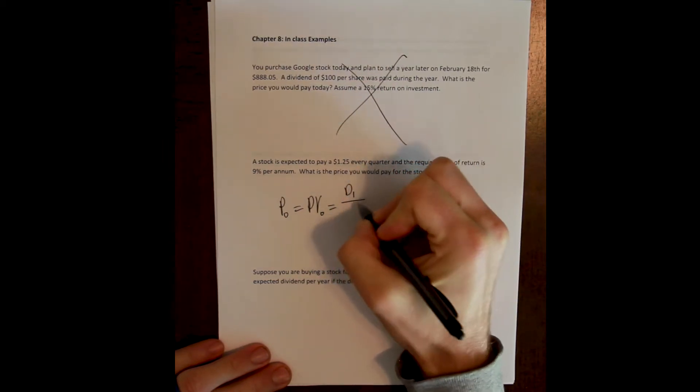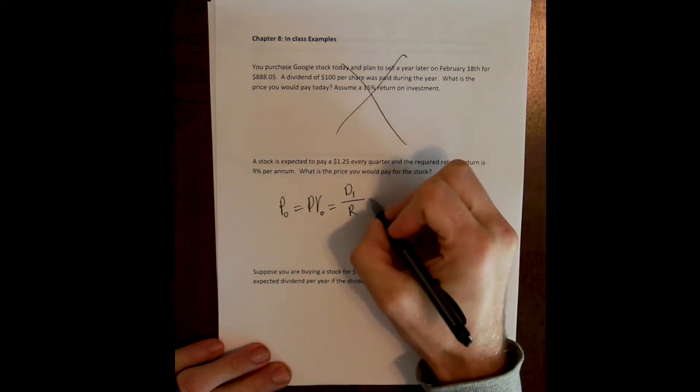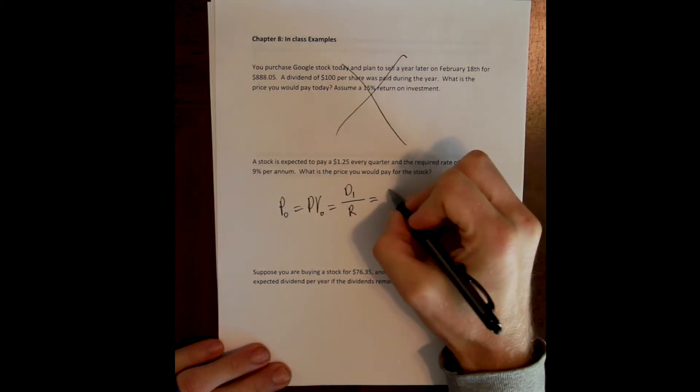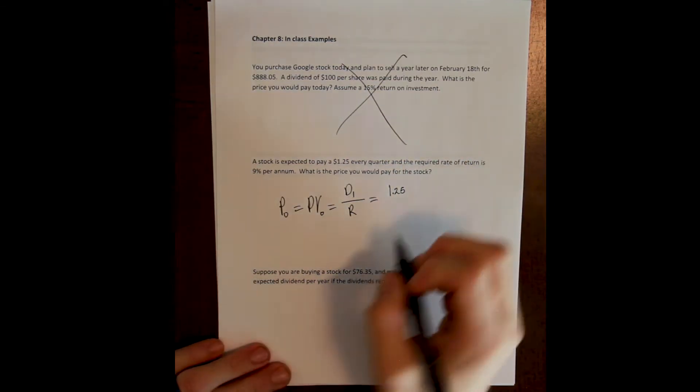The price is equal to the present value, and the present value is equal to the dividend, the first period's dividend, divided by the rate of return. The first dividend is $1.25, and so is the second and the third because these are constant dividends.